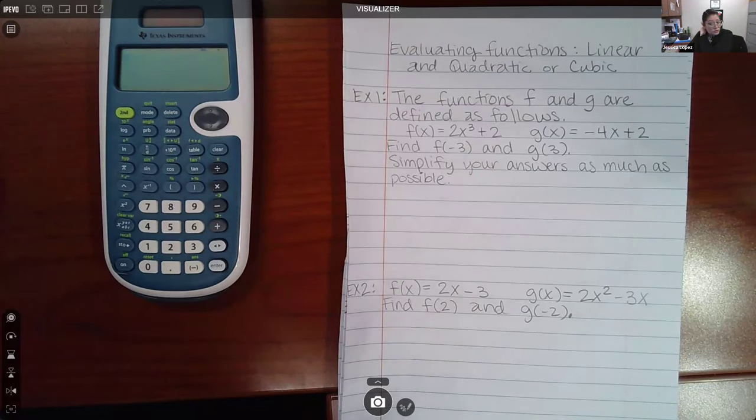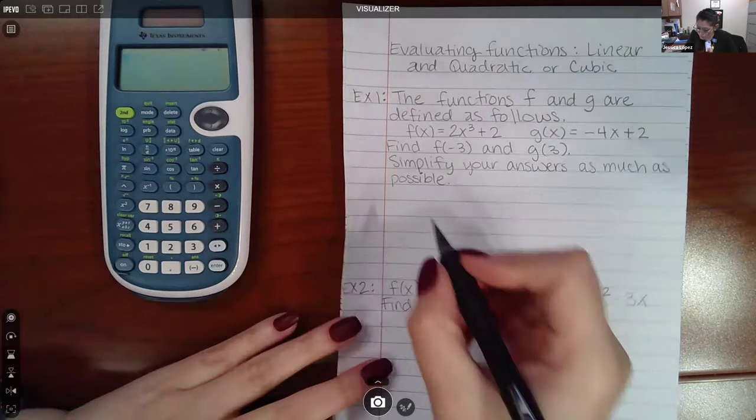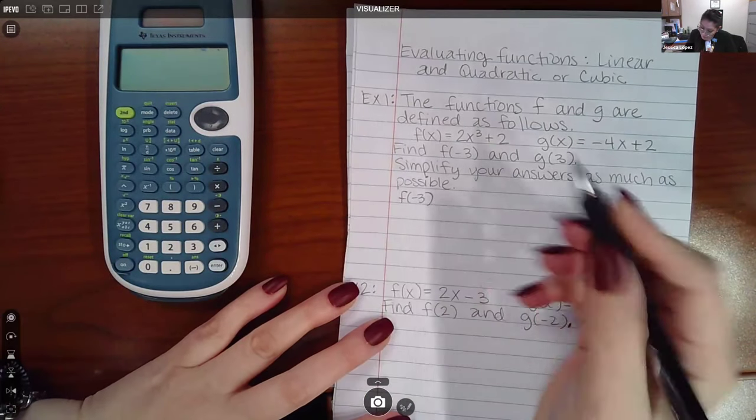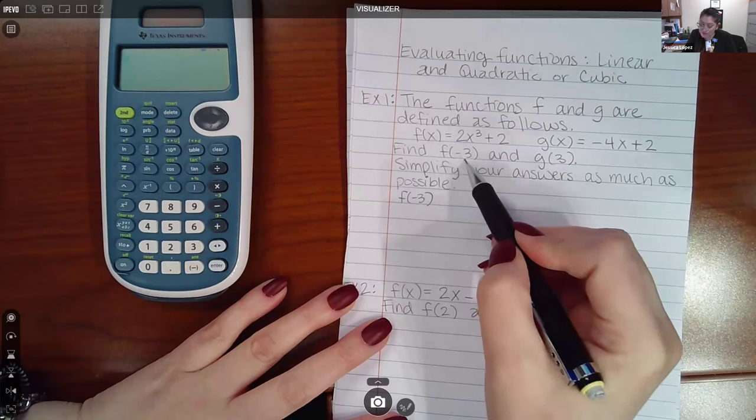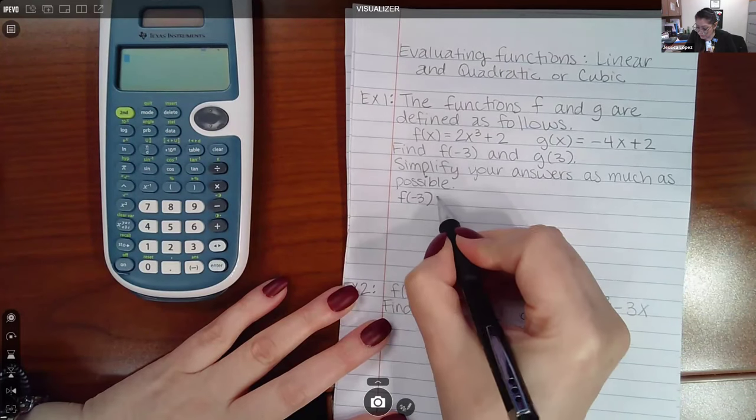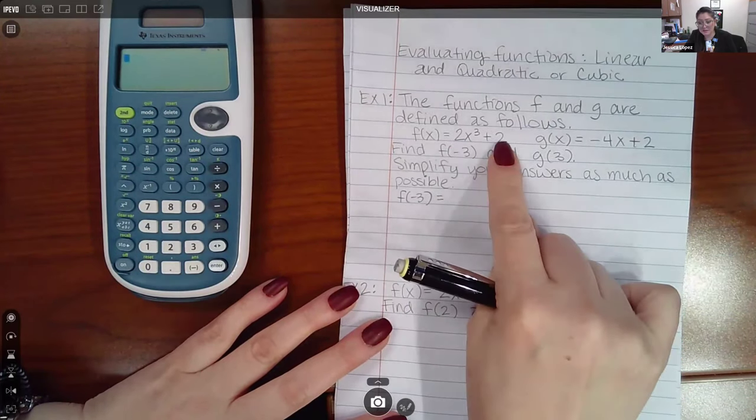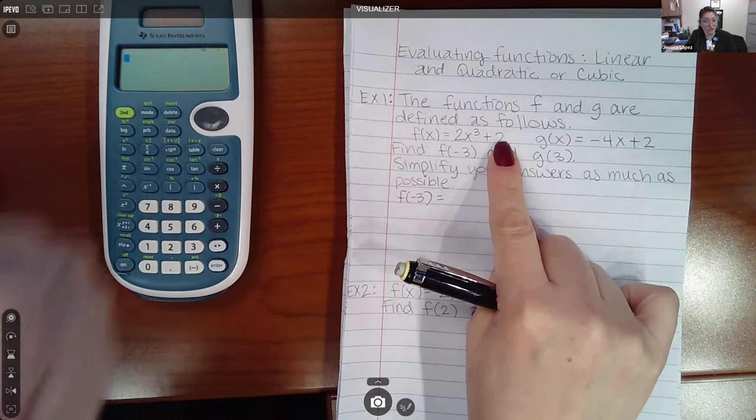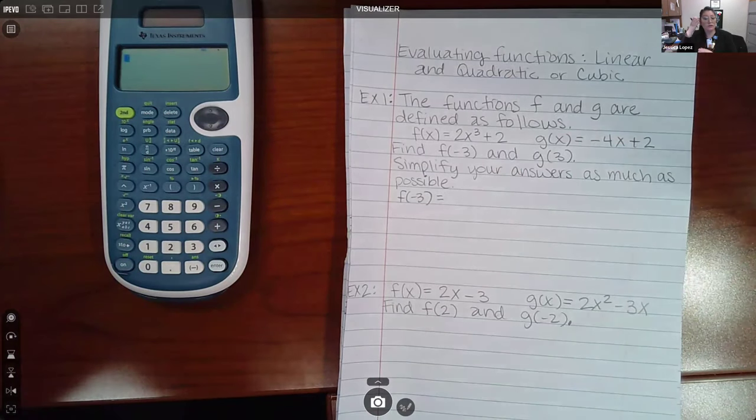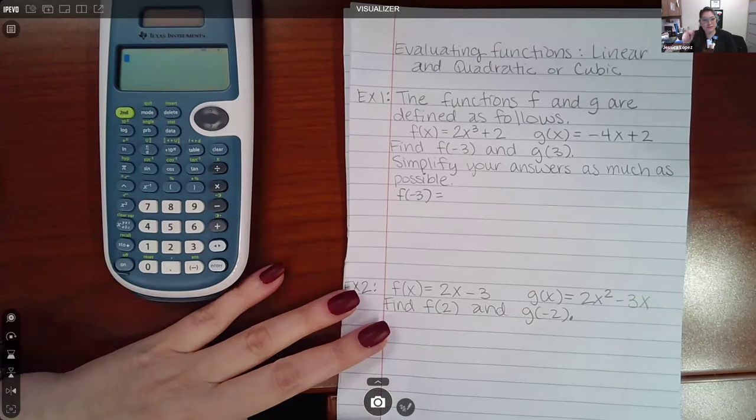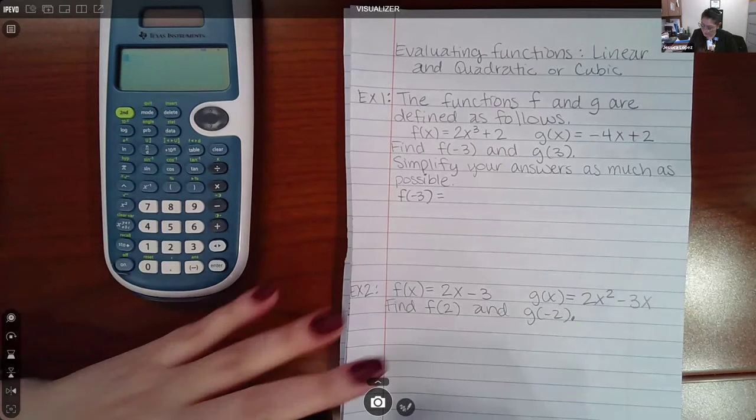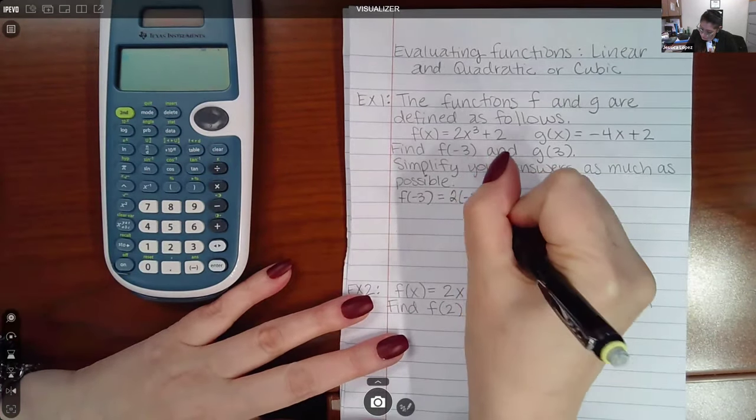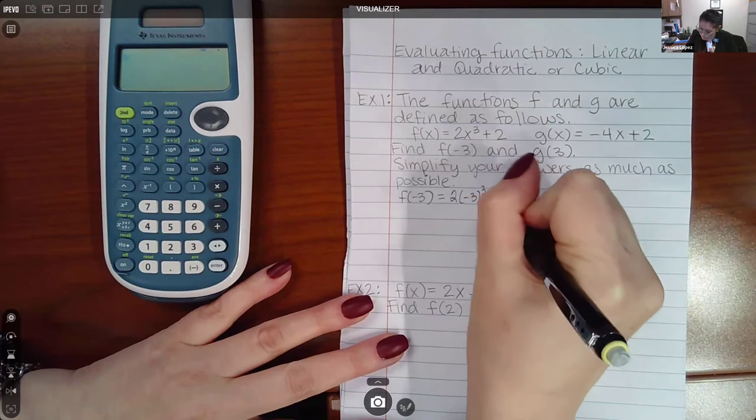So what we're going to do is we're going to go ahead and start with the first one, which is f of negative 3. Now remember, there was an x in this parentheses, so what that notation is telling you is that in this formula to calculating f function values, we're going to basically replace the x with this negative 3. So this becomes 2 negative 3 cubed plus 2.